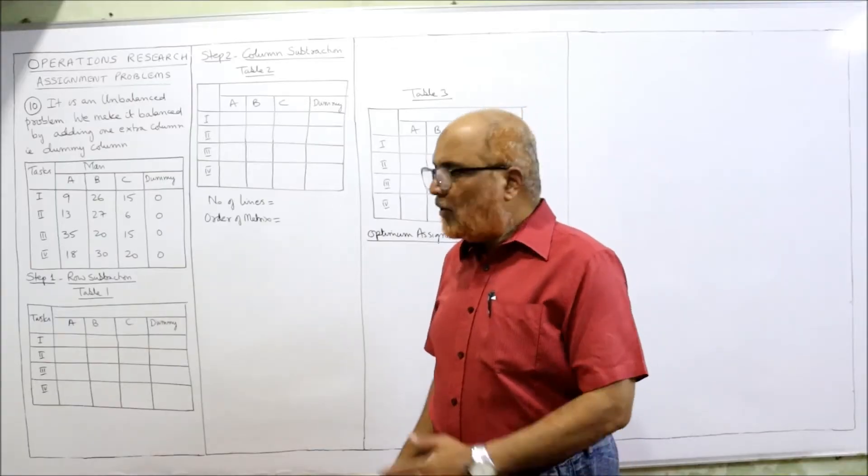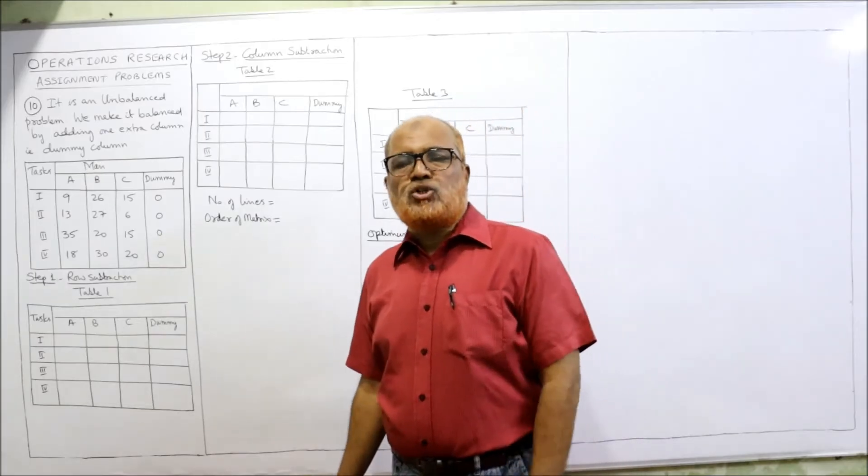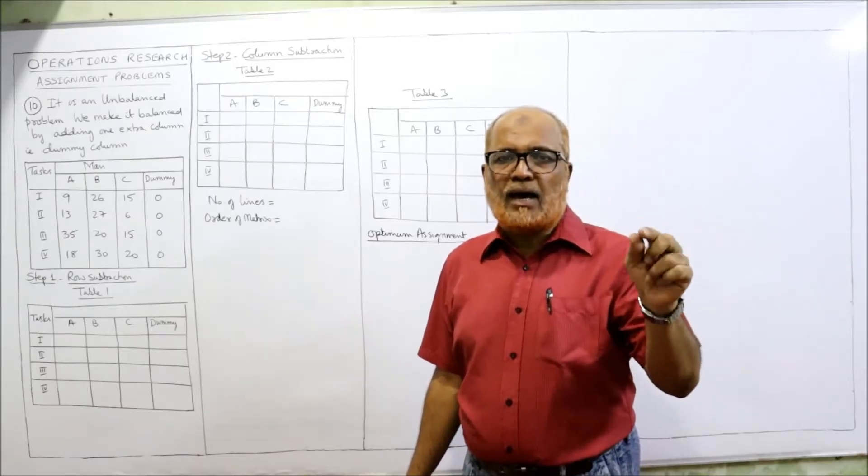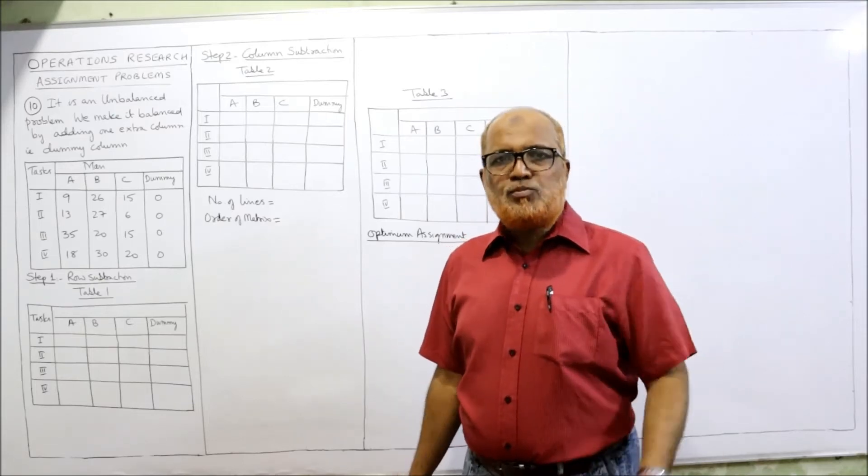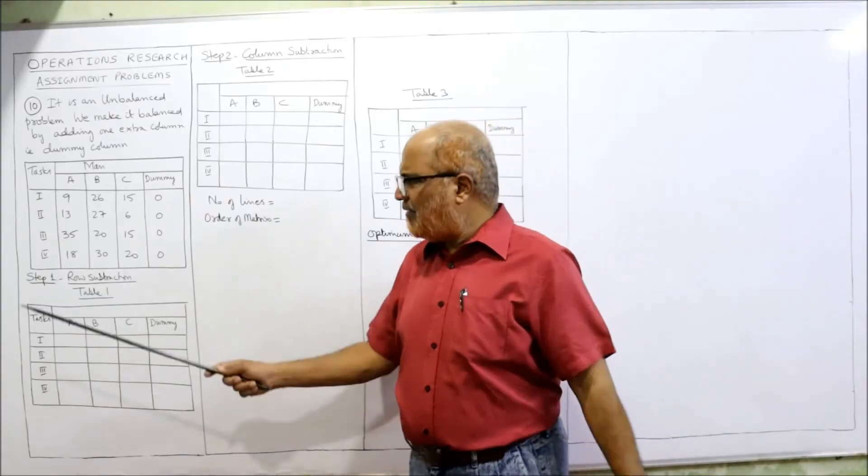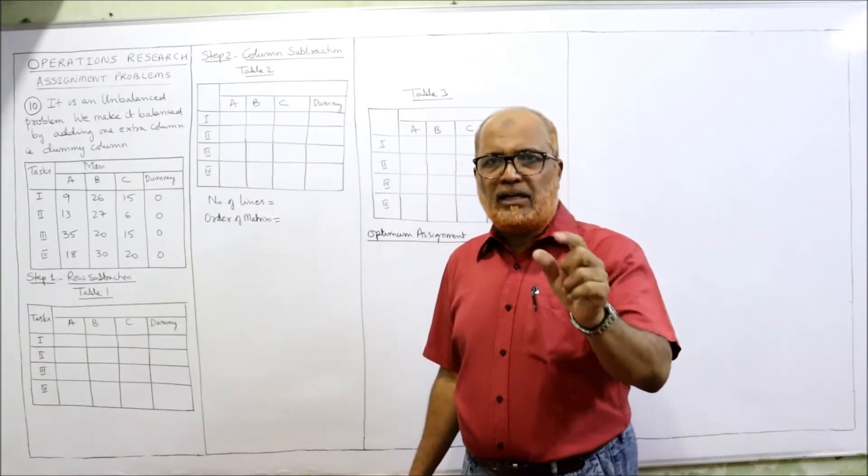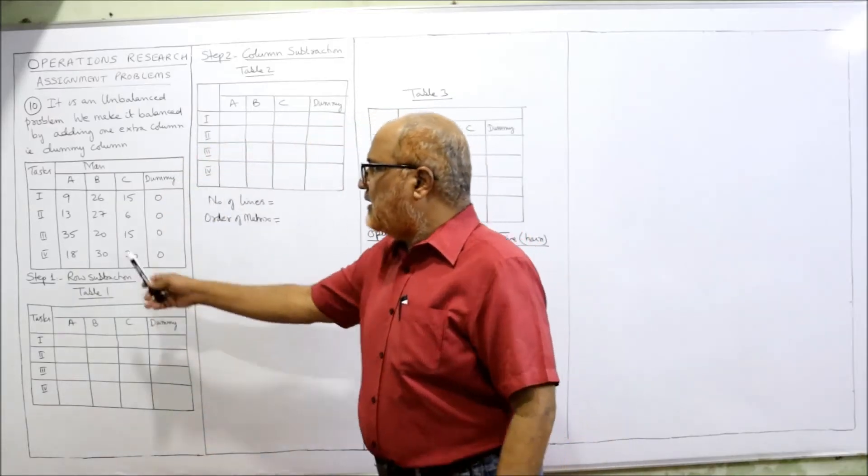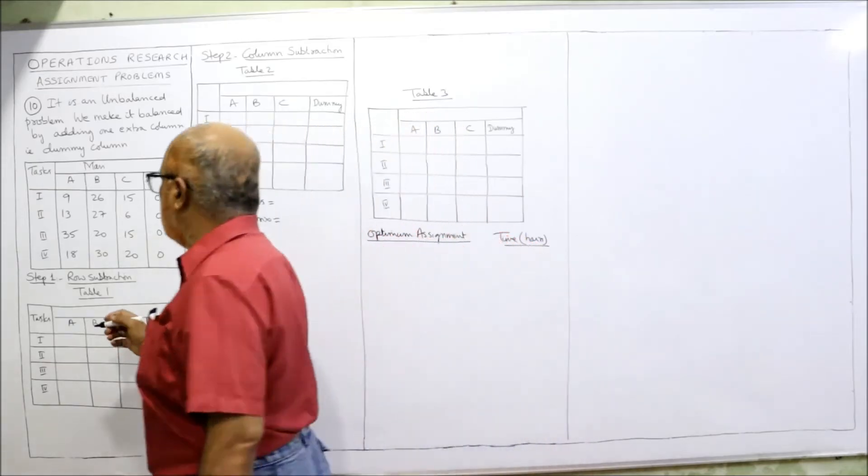From here onwards, the same steps. Step number 1: row subtraction. What do you mean by row subtraction? Select the minimum element in each row and subtract that element from all other elements of that row. In the first row, minimum is 0, so subtracting 0 means same values we will get: 9, 26, 15,